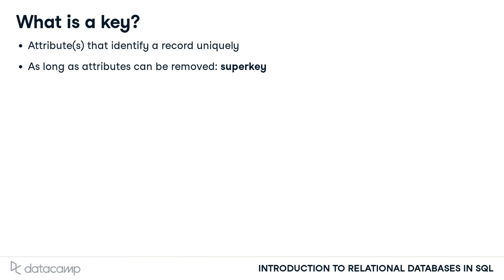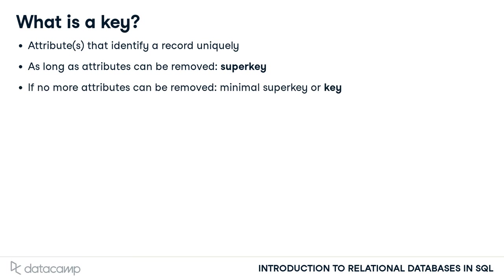However, it's not called a key, but a super key, if attributes from that combination can be removed and the attributes still uniquely identify records. If all possible attributes have been removed but the records are still uniquely identifiable by the remaining attributes, we speak of a minimal super key. This is the actual key. So a key is always minimal.